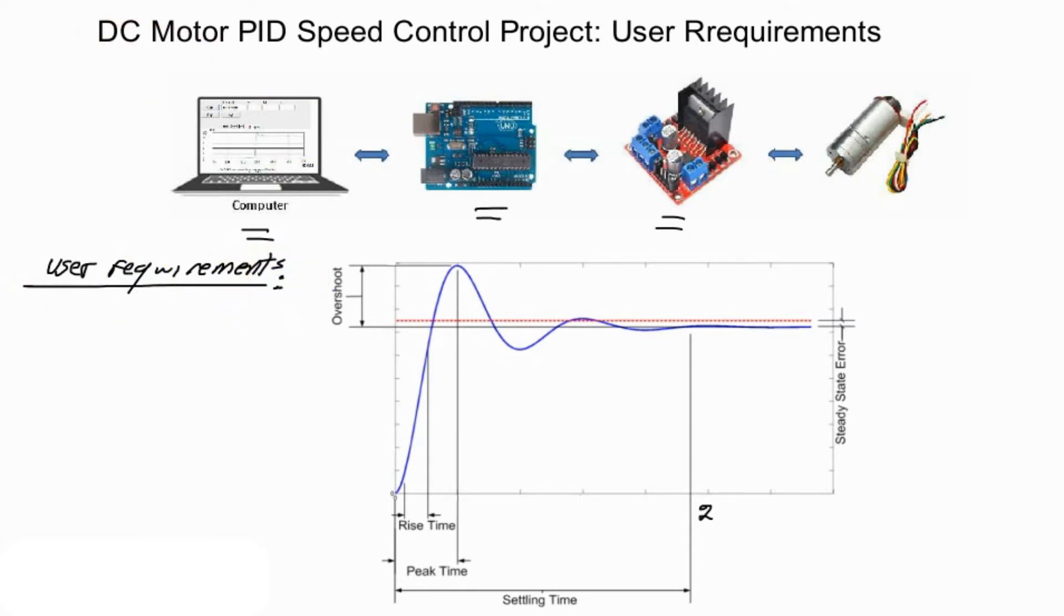Now remember that the user requirements or the design requirements are the behavior response for the DC motor at the given step input. So the question is: what is the step input that we are designing the controller around? So the user requirements can be written as such.